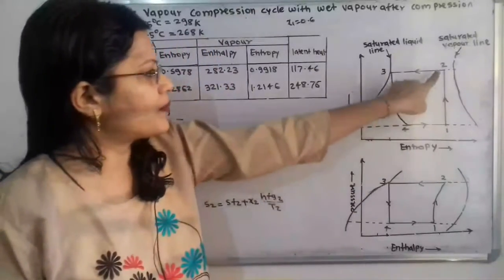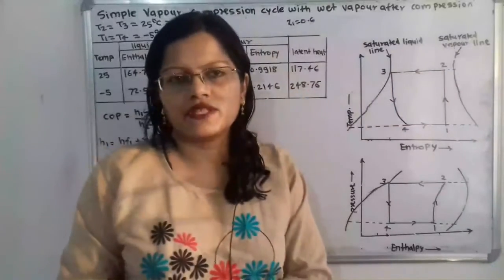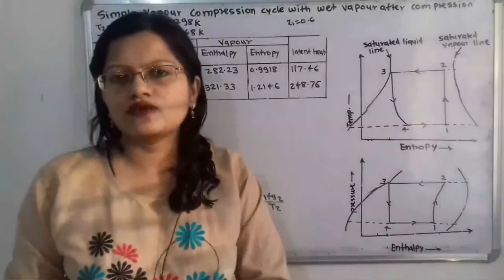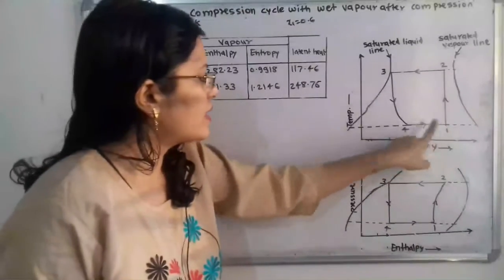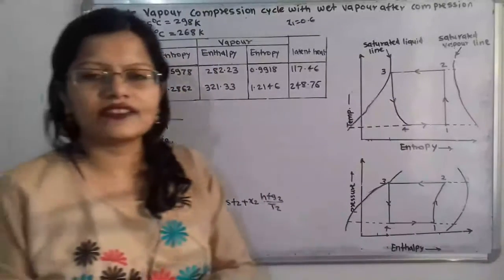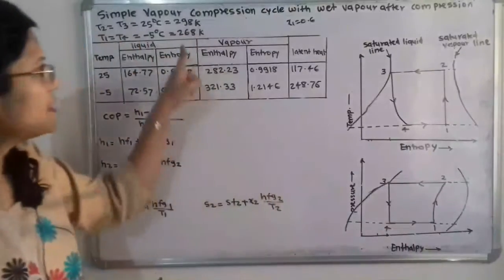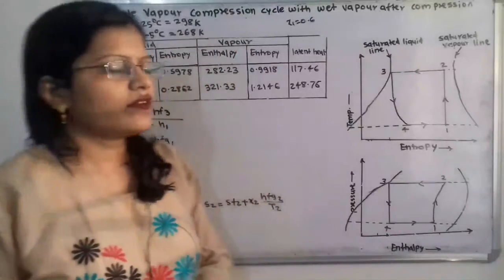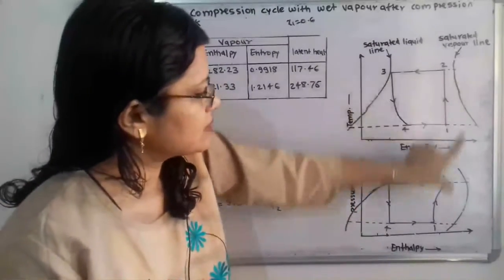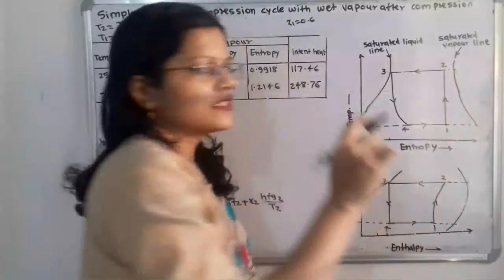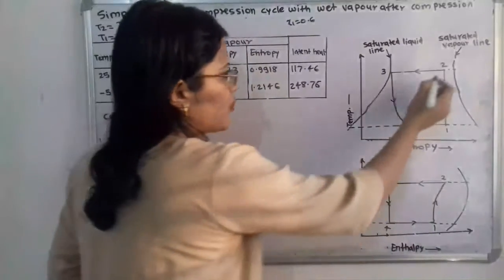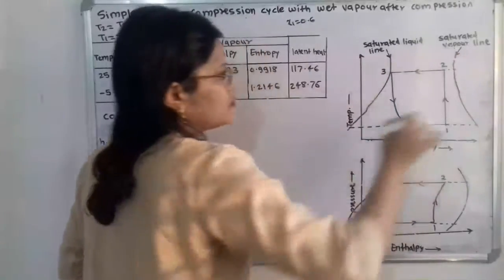Now the temperature range 25 and minus 5 is given. If we observe the temperature-entropy diagram, points 2 and 3 are at higher temperature. So T2 is equal to T3 is equal to 25 degree Celsius, which is equal to 298 Kelvin. And points 1 and 4 are at lower temperature. So T1 is equal to T4 is equal to minus 5 degree Celsius, which is equal to 268 Kelvin. This is the example for wet vapor after compression, meaning when the compression process is completed, point 2 contains a liquid plus vapor mixture and lies between the saturated liquid line and the saturated vapor line.